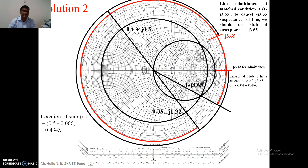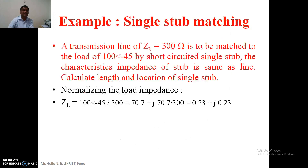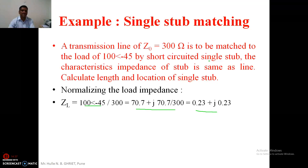Theoretically both solutions are correct, but solution one is more feasible and practical than solution two in this case. In other examples the reverse may be true, so we must examine both solutions before selecting the actual answer. There is another example where values are given in polar form — converting to rectangular form, the procedure remains the same as described. That concludes the topic of single stub matching. Thank you.